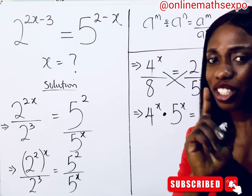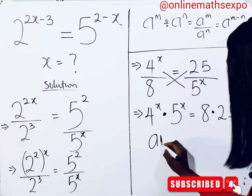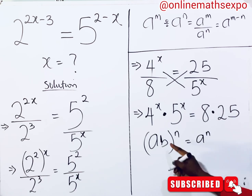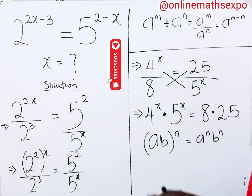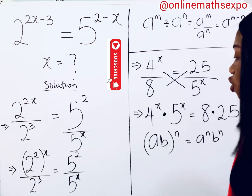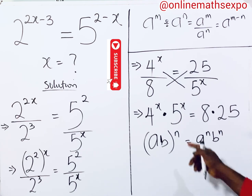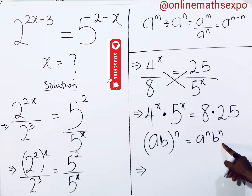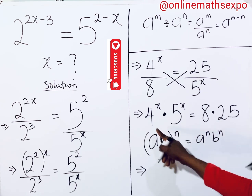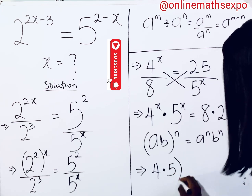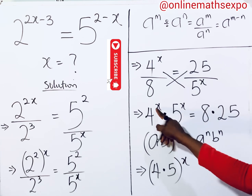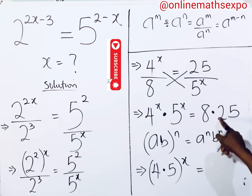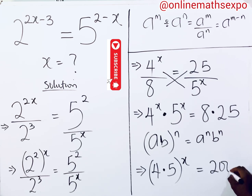Remember this rule: when you have (a·b) raised to the power of n, it means a to the power of n times b to the power of n. So on the left side, 4 to the power of x times 5 to the power of x becomes (4×5) to the power of x, which is 20 to the power of x. Multiplying 25 by 8 on the right gives us 200.